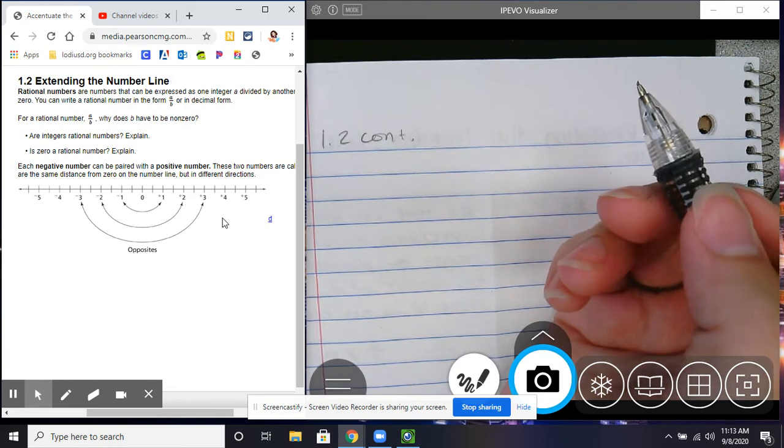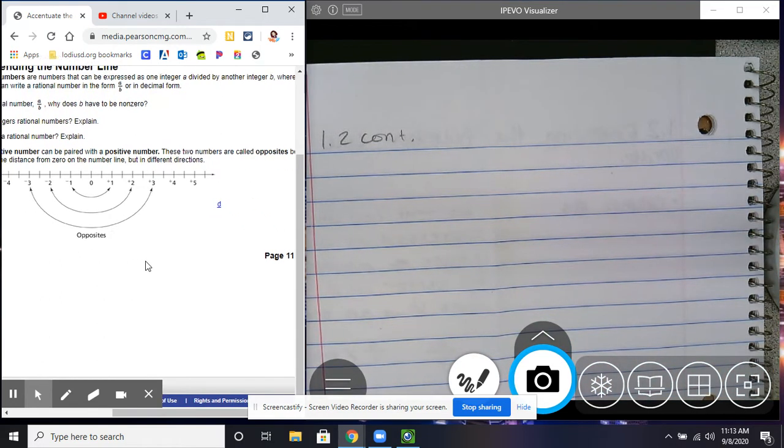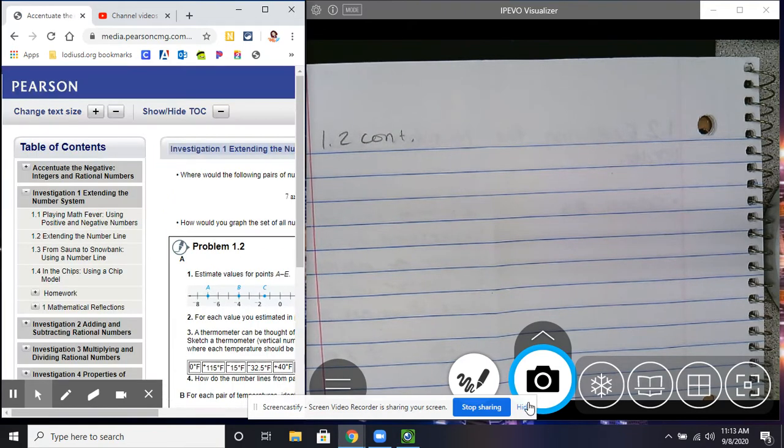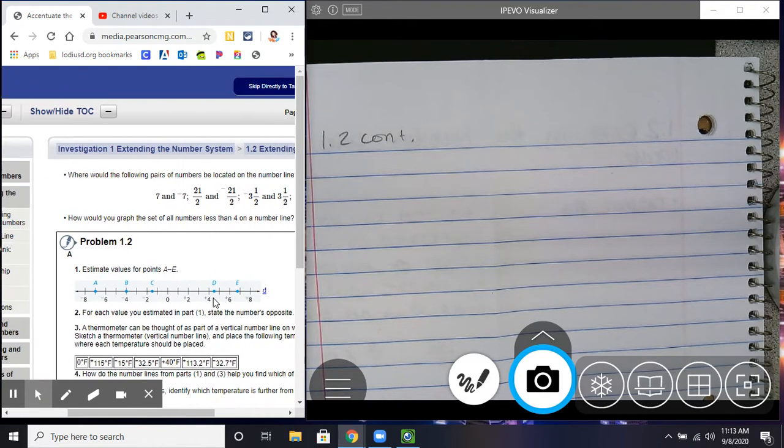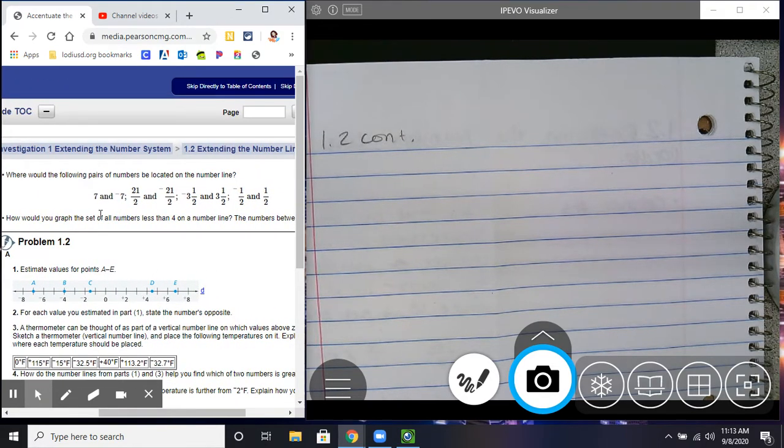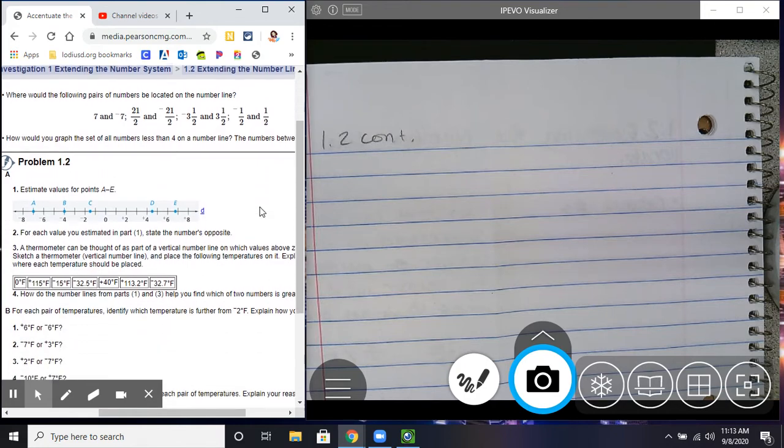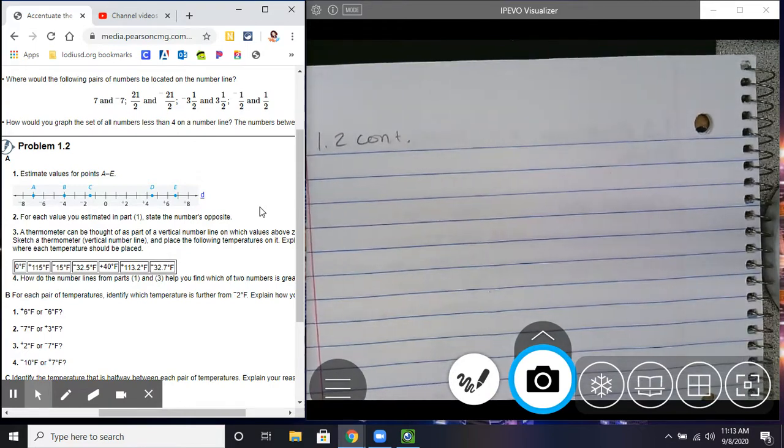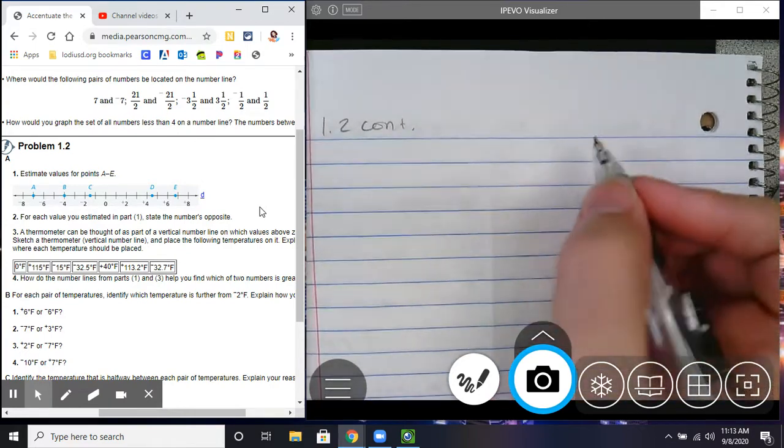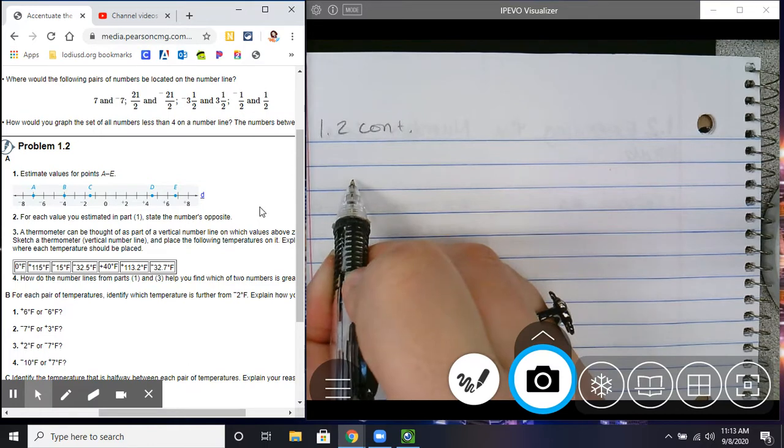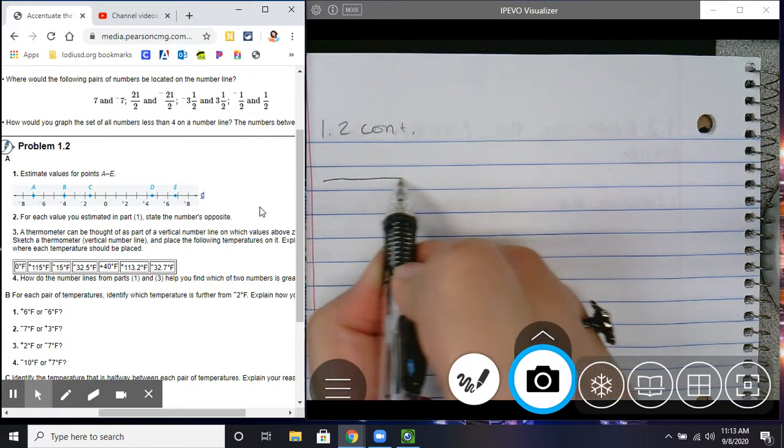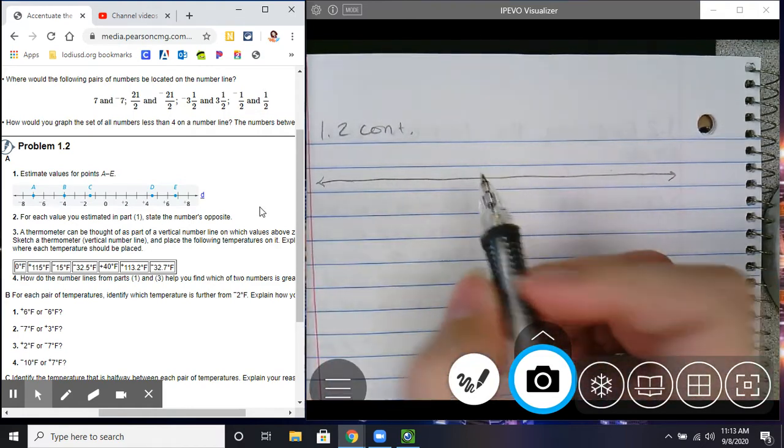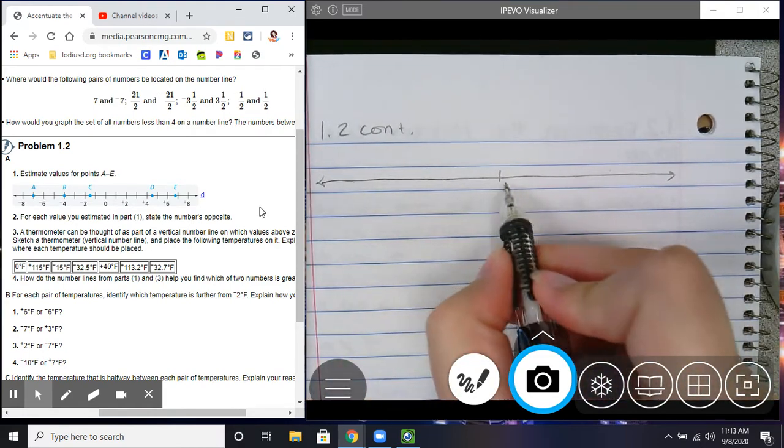It says, where are the following pairs of numbers be located on the number line? I'm on the next page. Right here, these. So, I'm going to do this for you because I think this is really important. If you don't understand number lines and such things, then this is not going to go well for you. So, I'm going to have my number line. I'm going to make it very long. Yes, I would do this in your notebook too. I'm going to have 0 right in the middle.